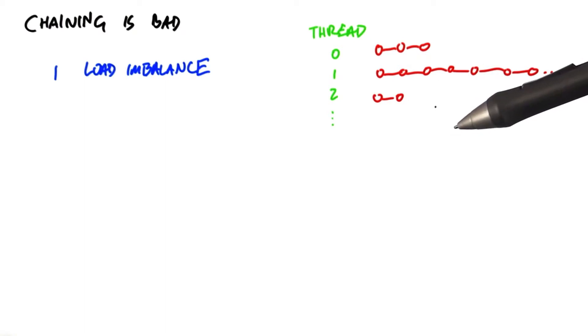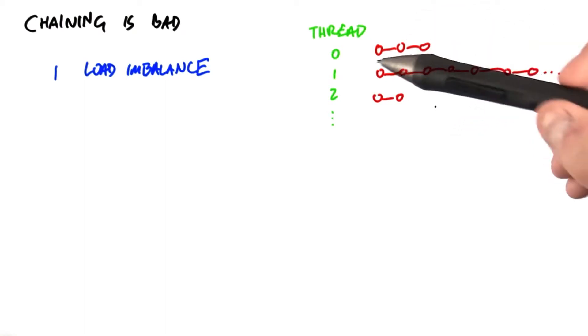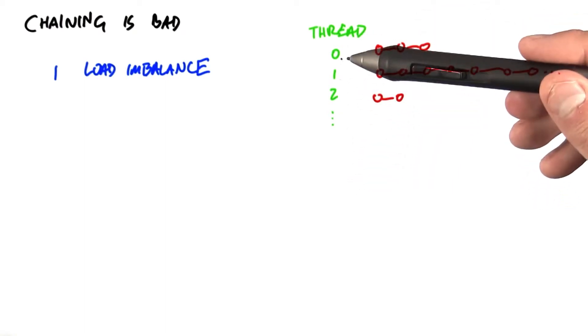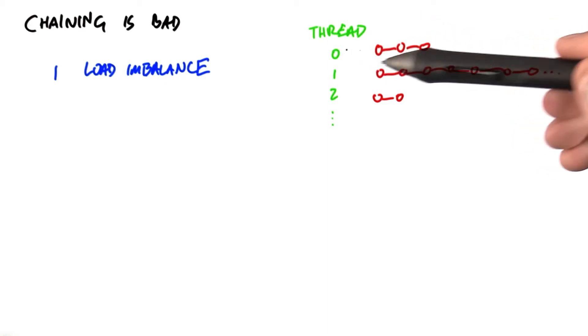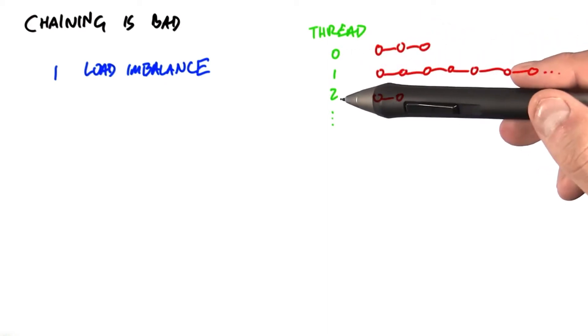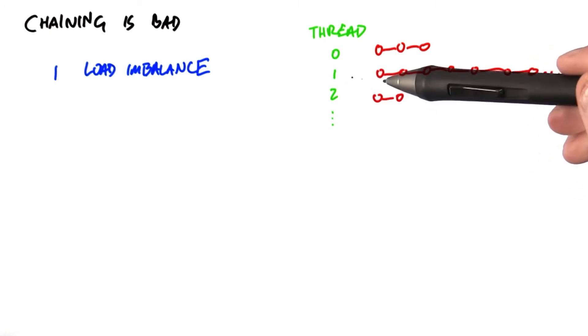More problematic, however, is searching the linked list in the bucket. So, we have a number of threads here. Each thread ends up looking in a different bucket. This particular bucket has three items. The bucket for thread two has two items. But the bucket for thread one has many, many, many items.